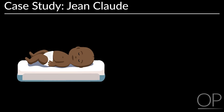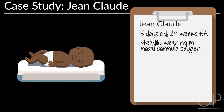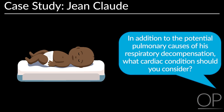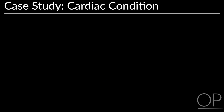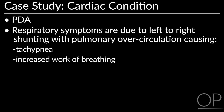To review the content from this chapter, we will look at the case of a newborn named Jean-Claude. He is 5 days old, 29 weeks gestational age. He had been steadily weaning on nasal cannula oxygen, but today his oxygen saturation has fallen from 95% to 87%. He is also tachypneic and has retractions and mild nasal flaring. In addition to a potential pulmonary cause, PDA should be considered. His respiratory symptoms are due to left-to-right shunting with pulmonary over-circulation, causing tachypnea, increased work of breathing, and hypoxia.